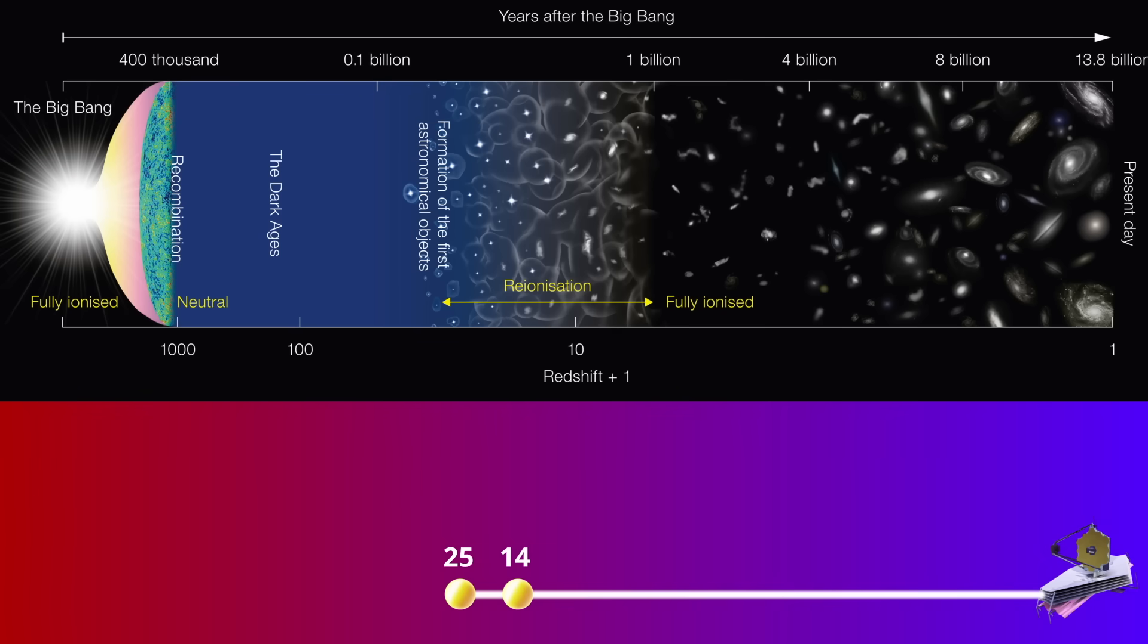Either way, the message is clear. If these candidates are real, the Big Bang timeline has a problem. To make the data fit, you have to choose between galaxies that form stars with godlike efficiency or primordial black holes lighting up the dark ages. Both explanations amount to patching over a much deeper issue: that galaxies this early simply shouldn't exist in the Big Bang model.